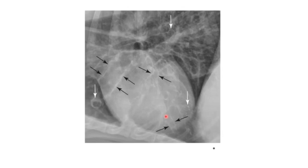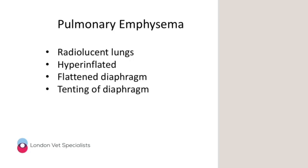So that's what bronchiectasis looks like — look out for it. There are patients with chronic bronchial disease that will have these sorts of changes. Just following on from bronchial disease, emphysema is gas trapping within the lung — effectively gas within the interstitium. We talked about infiltrate within the interstitium for interstitial pattern; now we're talking about gas within the interstitium, called pulmonary emphysema. You often see this in cats with chronic bronchial disease or allergic airway disease, presenting as very radiolucent, hyperinflated lungs with a flat diaphragm.